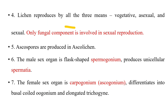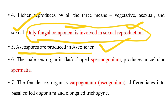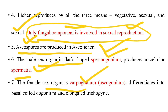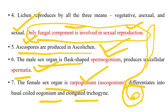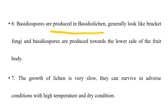Lichen is reproduced by vegetative, asexual, or sexual means. Only the fungal component is involved in sexual reproduction. Ascospores are produced in ascolichens and basidiospores in basidiolichens. The male sex organ is the spermatogonium, which produces spermatia. The female sex organ is the carpogonium, differentiated into a coiled ascogonium and an elongated trichogonium.